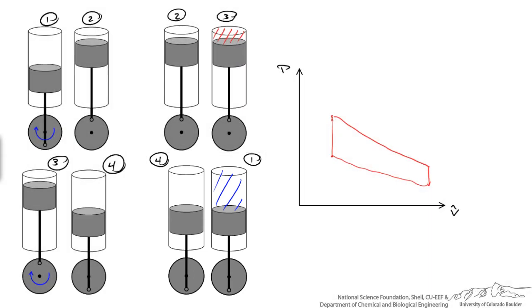So on a PV diagram, we'd label these four points. We go from one to two, adiabatic isentropic compression. From two to three is when the gasoline burns instantaneously, so it's constant volume. The pressure just shoots up because the temperature increased. And then we go from three to four, this isentropic expansion, and then heat leaving the system, bringing us back down to state one.